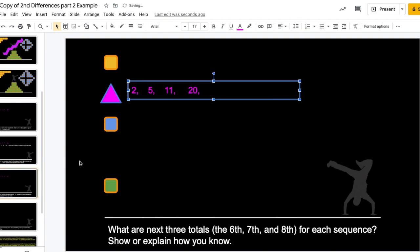Because on slide 8, I'm asking what the next 3 totals are. Alright, we just added 9. Now we're going to add 12. So, 32. And then we'll add 15. 47. And then we'll add 18. 65. And then we'll add 21 for 86.